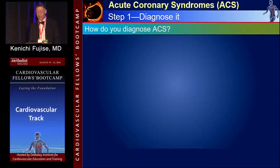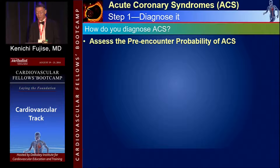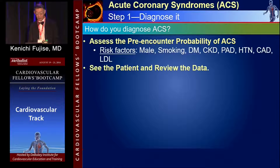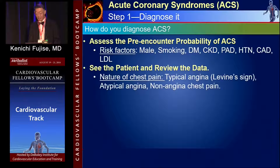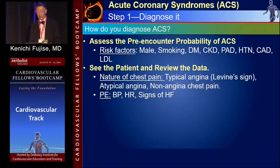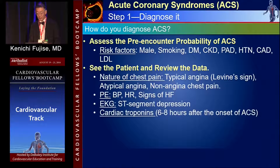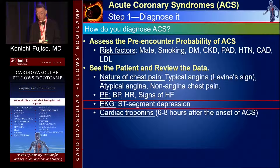How do you diagnose ACS? First, you have to assess the pre-encounter probability of ACS, paying close attention to risk factors: male, smoking, diabetes, CKD, PAD, hypertension, CAD, LDL. Then you have to see the patient and review the data, focusing on the nature of chest pain, classifying it into typical angina, atypical angina, or non-angina chest pain. Perform a quick physical examination paying attention to vital signs and signs of heart failure. EKG and cardiac troponins are the two most important lab data to review.